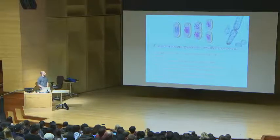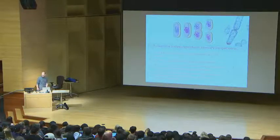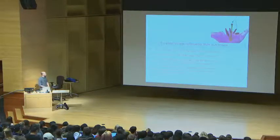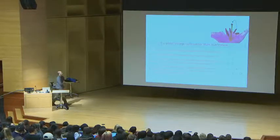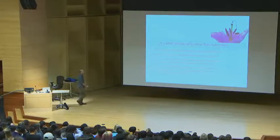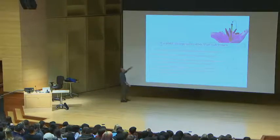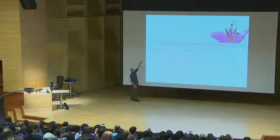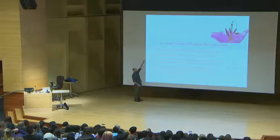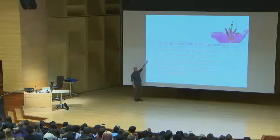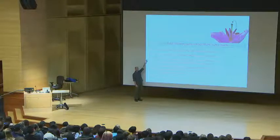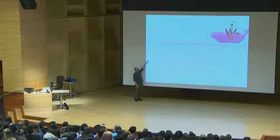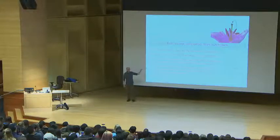I'm just going to go back one so we can discuss it. So, genetically identical to their parents - no, because mutation occurs. So B is true, mutation will occur. D is also true.